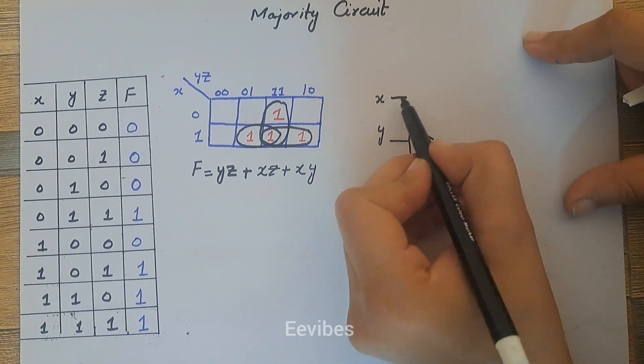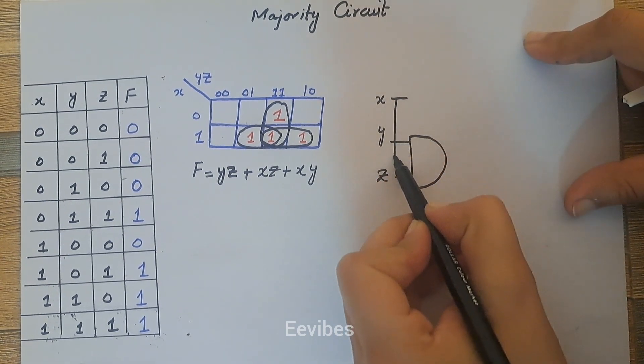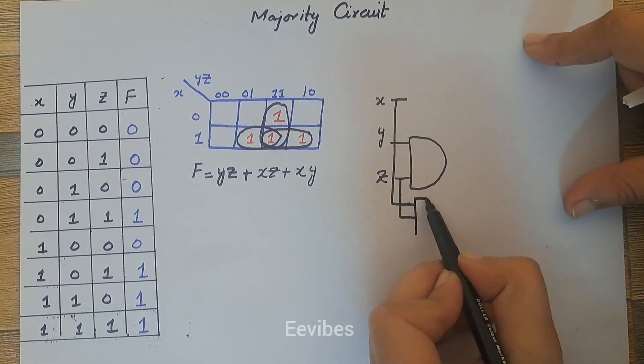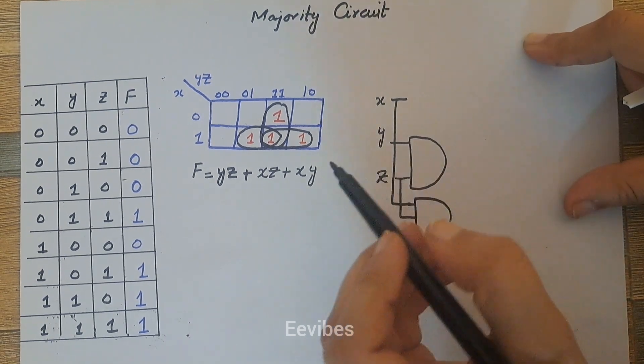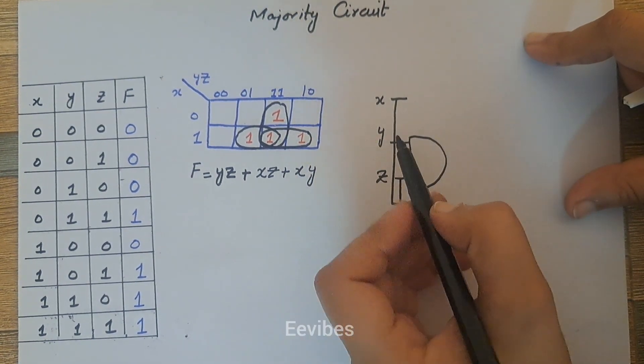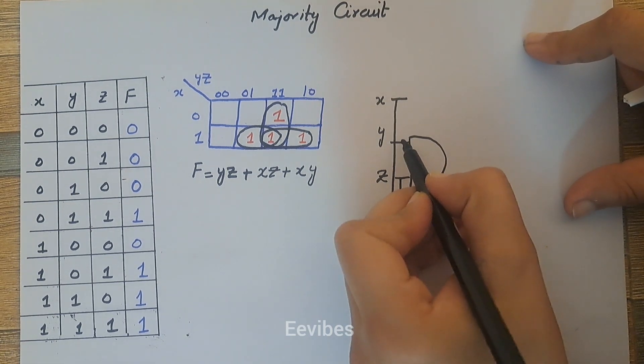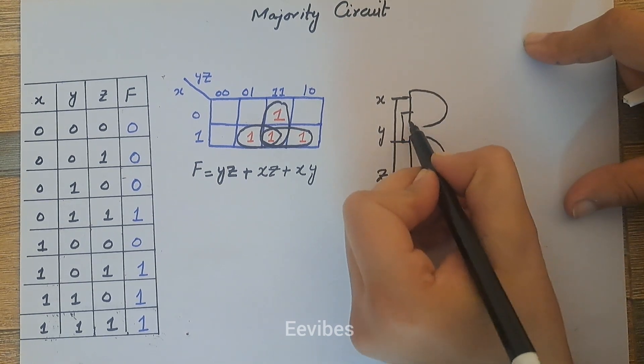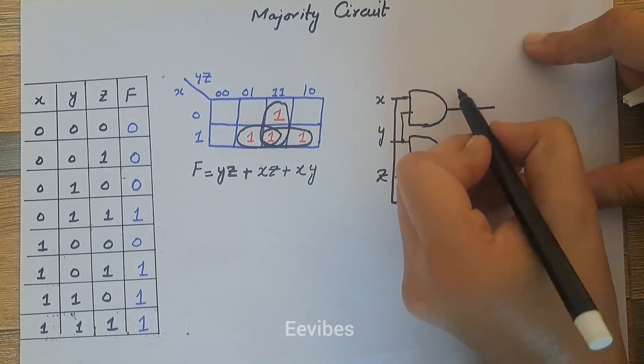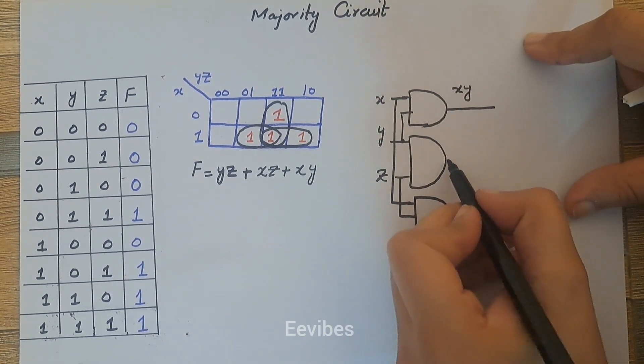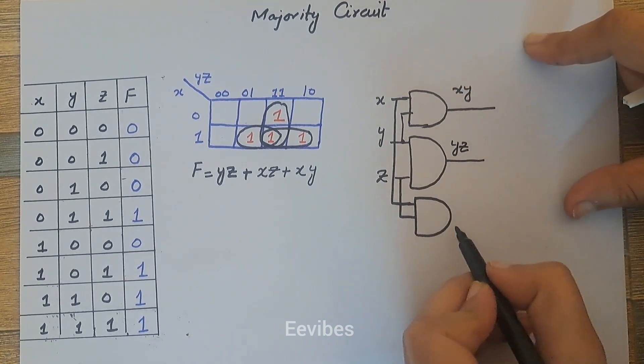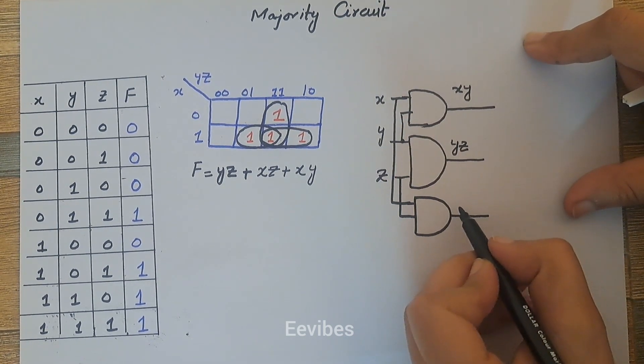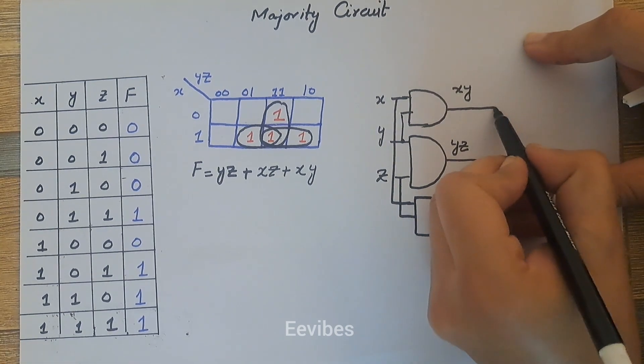Then you have to AND the x and z, so you can take x from here and you can take z from here, and you will AND these two variables. The last one is you have to take the AND of x and y, so I will take y from here and x from here. And hence this AND gate will produce xy, this will produce yz, while the last gate will produce xz.